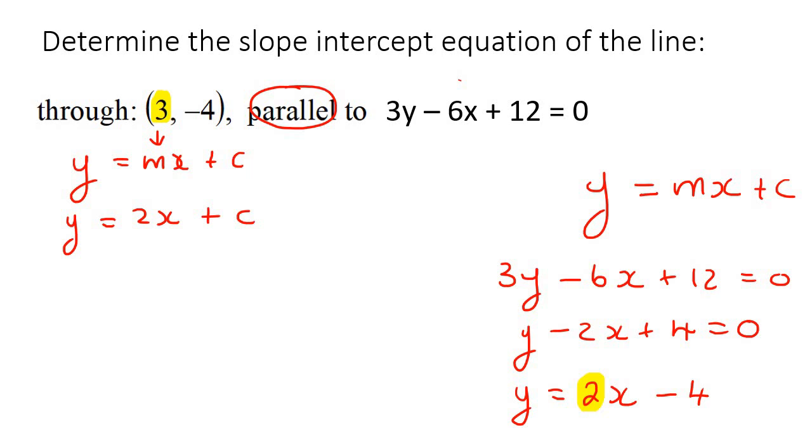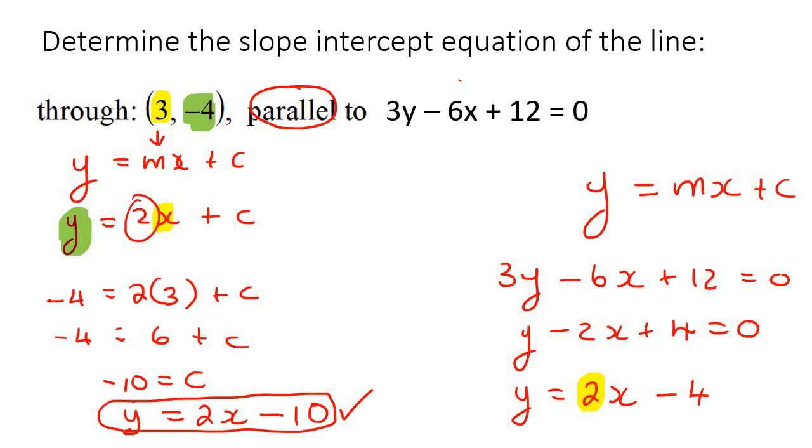Then to find c, I can take this point, which is x, and put it over there. And I can take this one here, which is y, and put it over there. So we end up with minus 4 equals 6 plus c. So c would be negative 10. Then I can write my final answer as y equals 2x, because that's the slope, minus 10. This would be our final answer for this question.